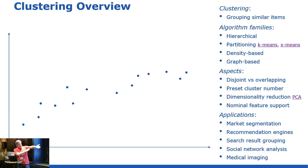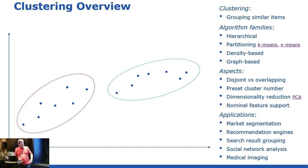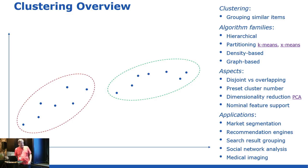Clustering is used for market segmentation, recommendations, search groups — when you do a search and get grouped results — social network analysis, medical imaging, and so on. It's not unrelated to classification, but there's no labelling of any kind. In the classification talk I had different classes of flowers; there are no classes here. We're just going to mathematically find things that are closely related.